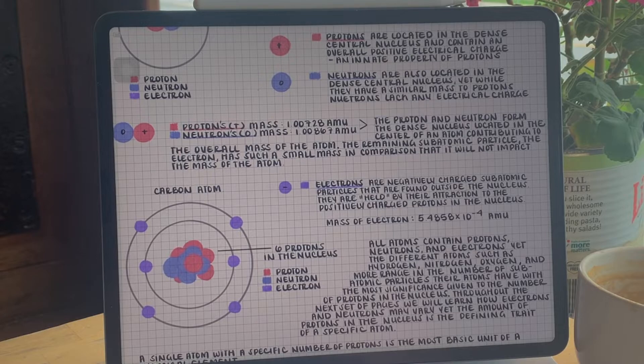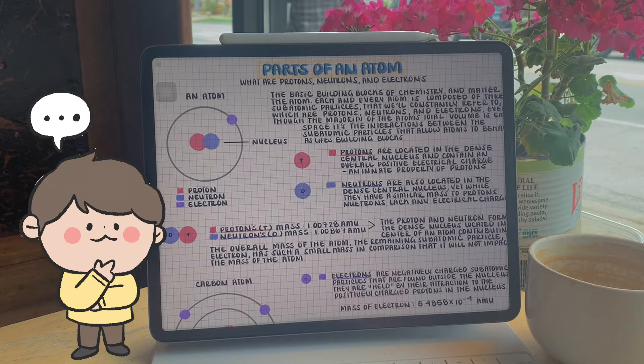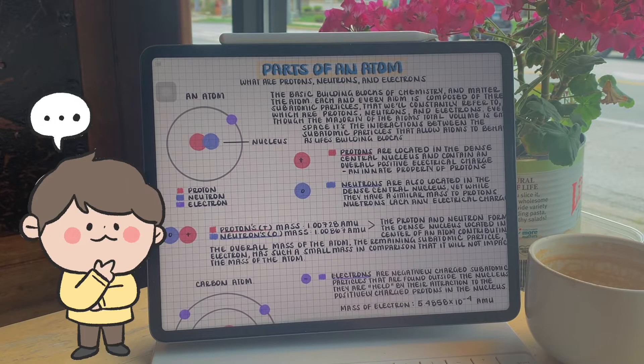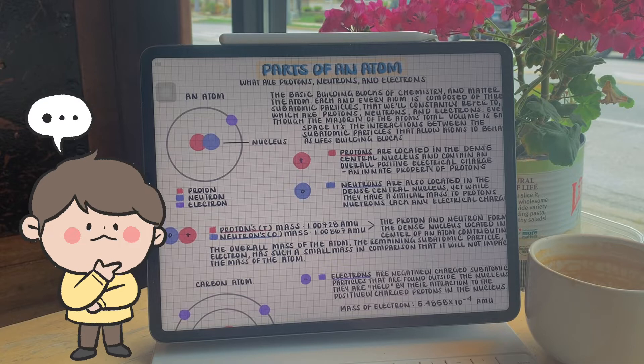All atoms contain protons, neutrons, and electrons. Yet the different atoms such as hydrogen, nitrogen, oxygen, and more range in the number of subatomic particles they have within their atoms.